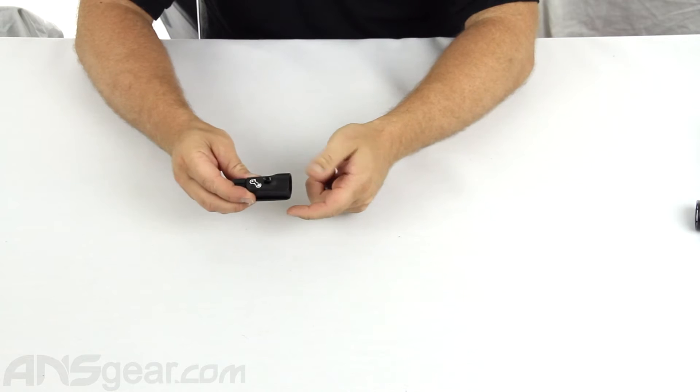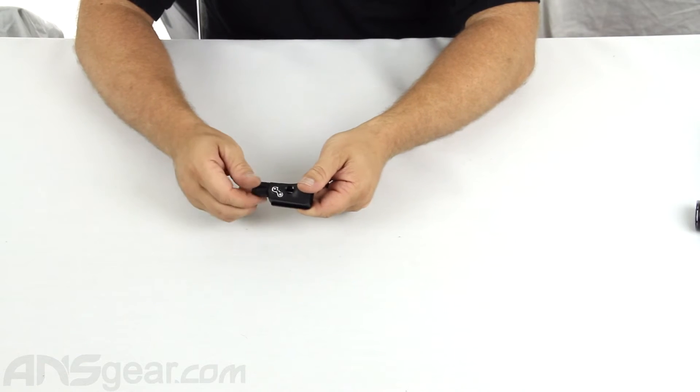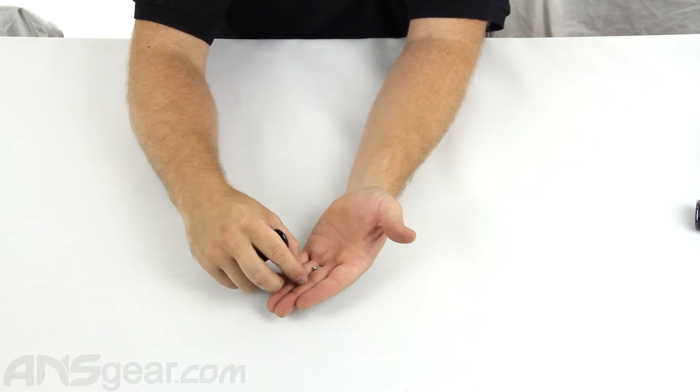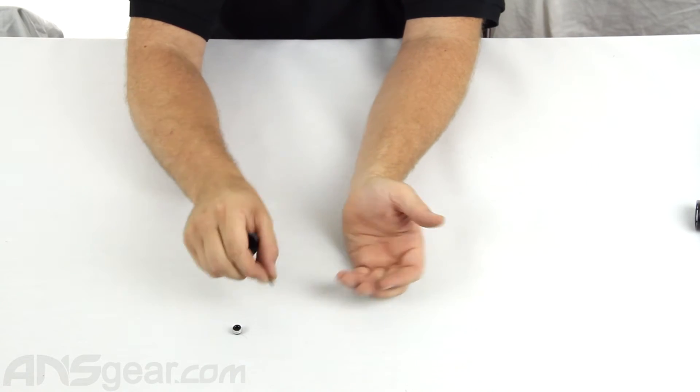You're going to get the dovetail itself or the on-off. You're going to get two fittings here. You're going to get a plug and you're going to get a set screw.